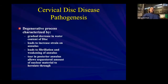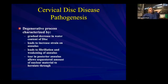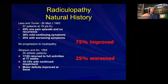The degenerative process is characterized by decreased water content or hydration of the disc, tearing in the annulus, fibrillation, and weakening of the annulus. Sometimes you'll see that as a high-intensity zone in the perimeter of the annulus on MRI. Ultimately this leads to herniation. This is really important information when counseling people about what to expect.